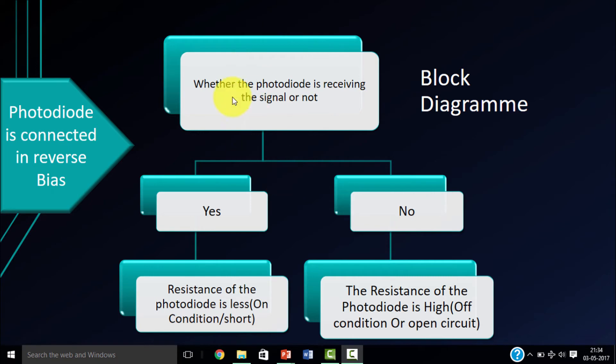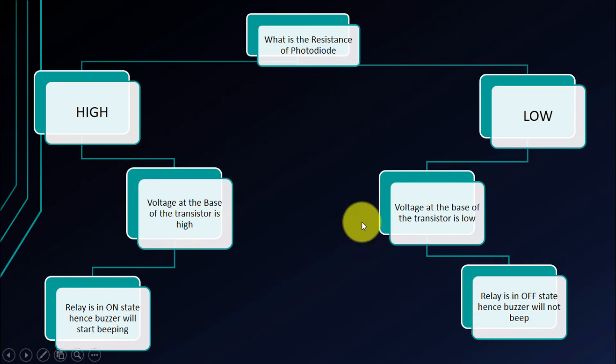Here is our block diagram which we used and the logic which we used for the building of the circuit. You can see we choose the resistance and all as I explained earlier, this is the part of the block diagram.